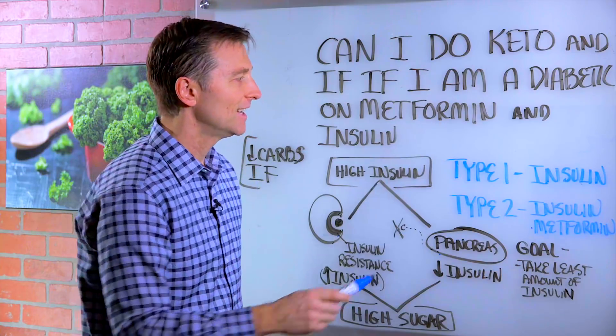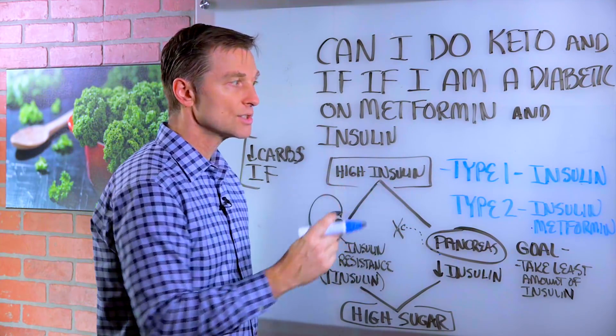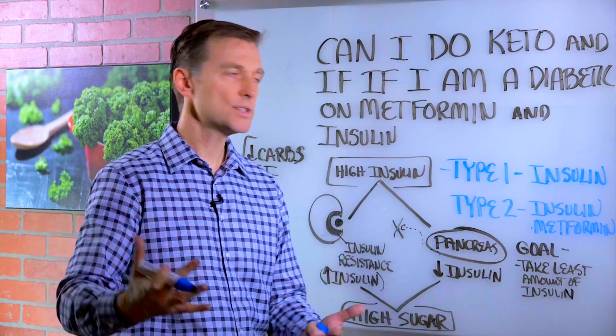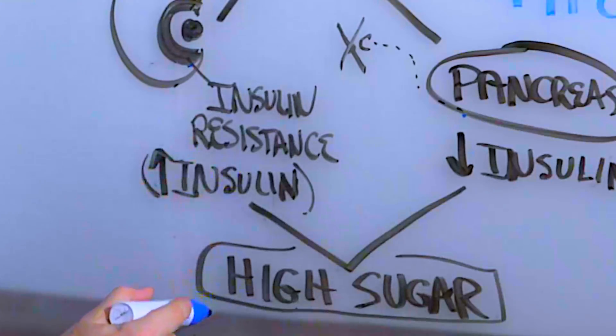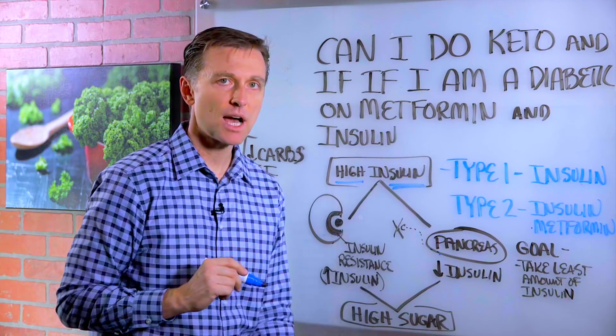But the problem is, if you're a type 1, they're giving you insulin. Your insulin is going to be high now because you're taking insulin to control this out-of-control blood sugar. So in both of these conditions, you have high sugar and high insulin at the same time.